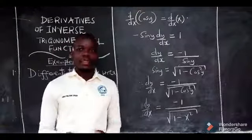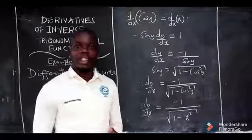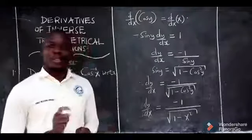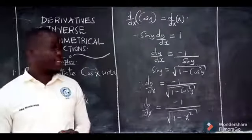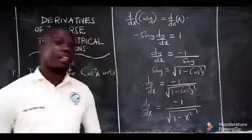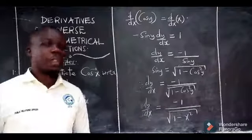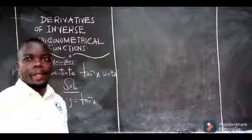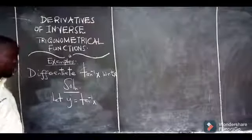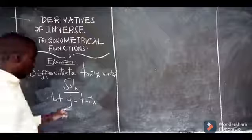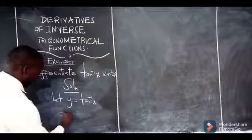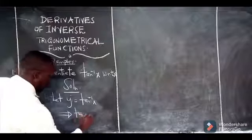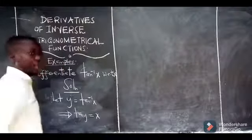In other words, the derivative of cos inverse of x is simply the negative of the derivative of sin inverse of x. That is a relationship we can easily observe. Let us move on to tan inverse of x. We are again letting y equal tan inverse of x, and this implies that tan of y is going to be the same as x.